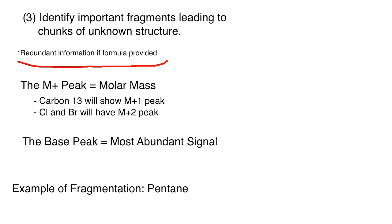You will also see some peaks sometimes that go beyond that. You can find carbon-13 peaks; those will show up at M+1. The reason for that is that the most abundant type of carbon is carbon-12.